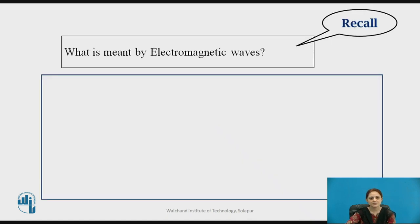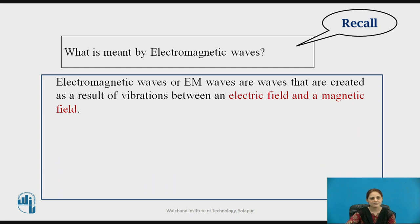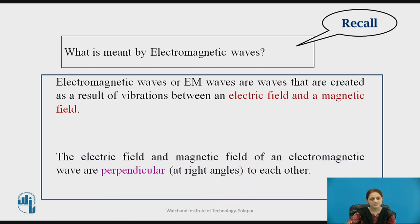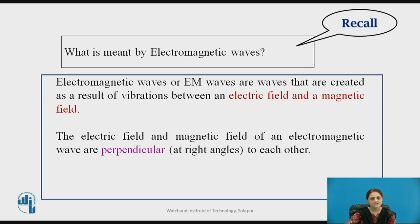Before going into the details of antennas, you can pause the video here for two seconds and recall what is meant by electromagnetic waves. Antennas are related to EM waves, so recall what electromagnetic waves are. The electromagnetic waves are nothing but a combination of electric field and magnetic field. These two fields are perpendicular to each other and they are traveling in a particular direction — the x direction, y direction, or z direction.